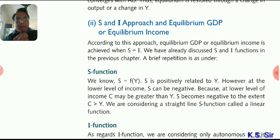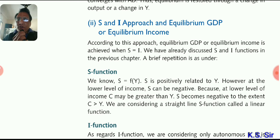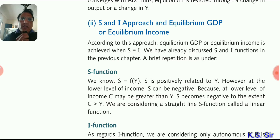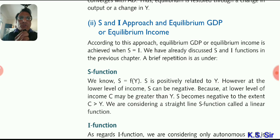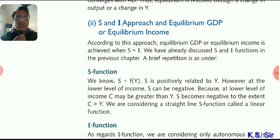S=I approach. S stands for saving, I stands for investment. Saving is a part of income, and investment is the expenditure by the producer. According to this approach, equilibrium GDP or equilibrium income is achieved when S is equal to I. At that condition, aggregate demand and aggregate supply will already be equal.